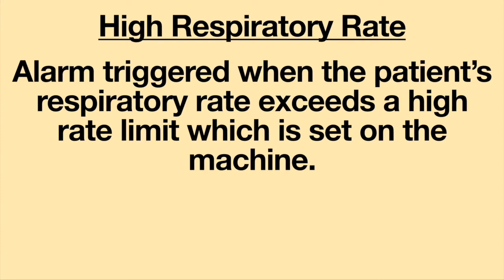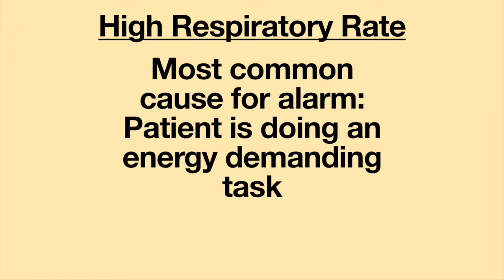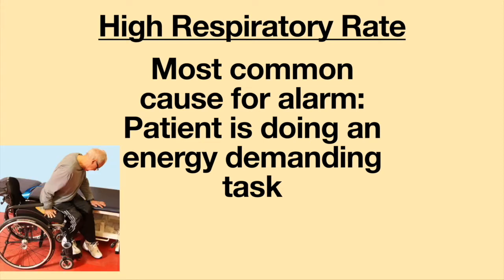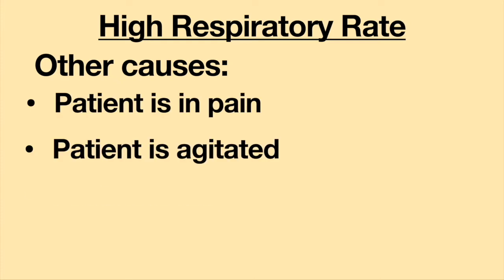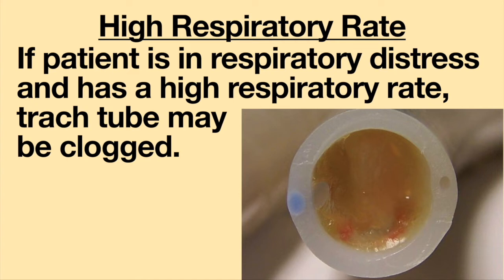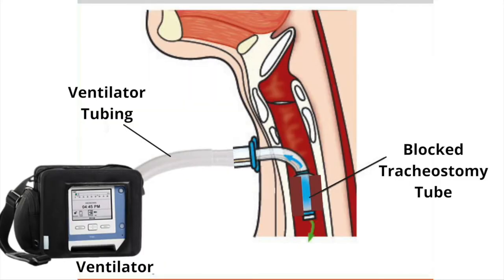A high respiratory rate alarm is triggered when the patient's respiratory rate exceeds a high rate limit set on the machine. The most common cause is the patient performing an energy-demanding task such as transferring into or out of a wheelchair or lifting a heavy object. Other causes include pain, agitation, or fatigue. If the patient is in respiratory distress, the tracheostomy tube may be clogged with mucus, delivering little air to the lungs, causing the patient to breathe faster to compensate.